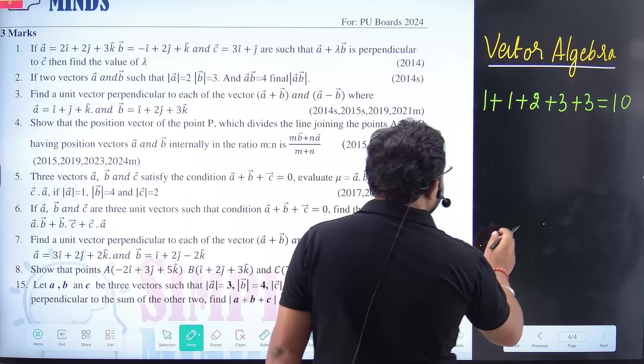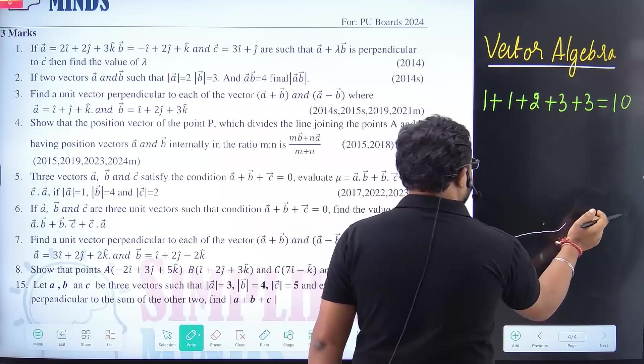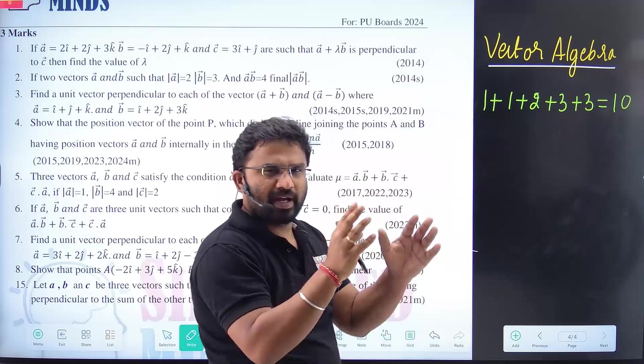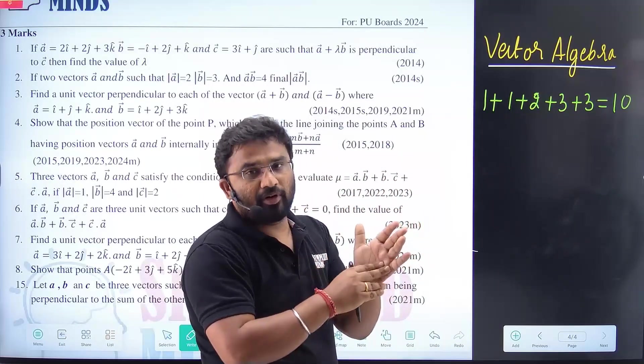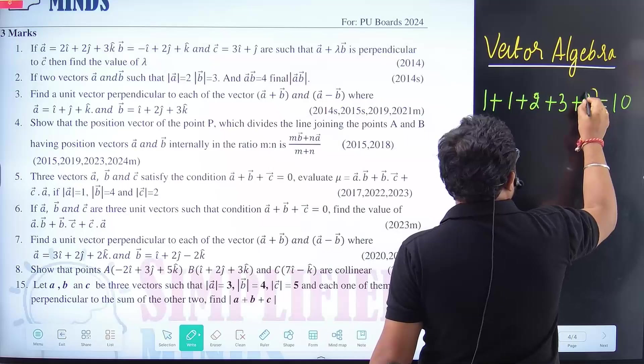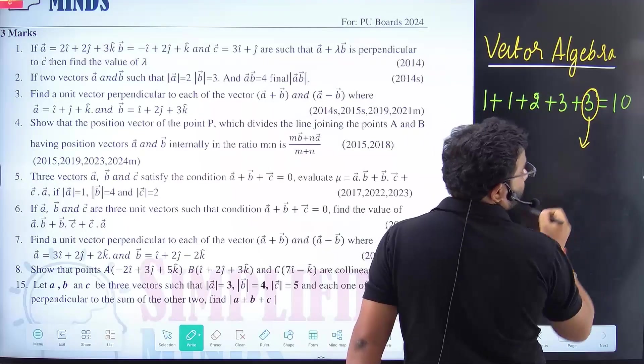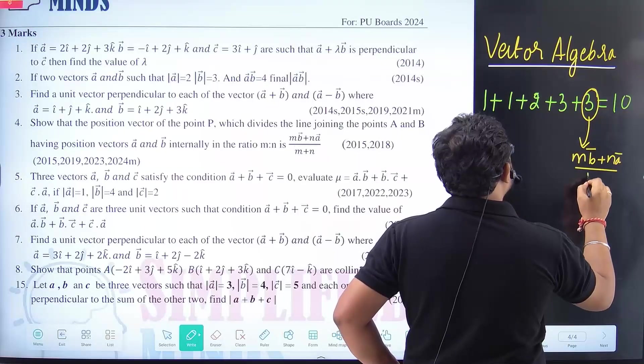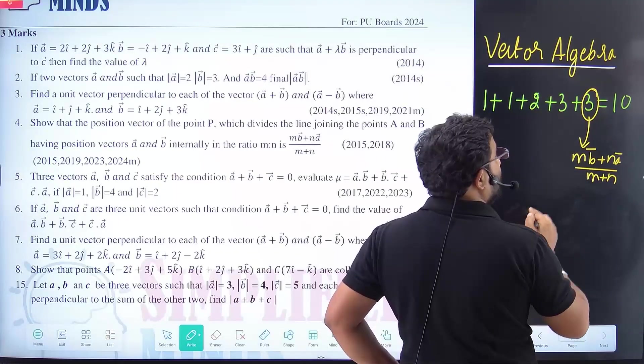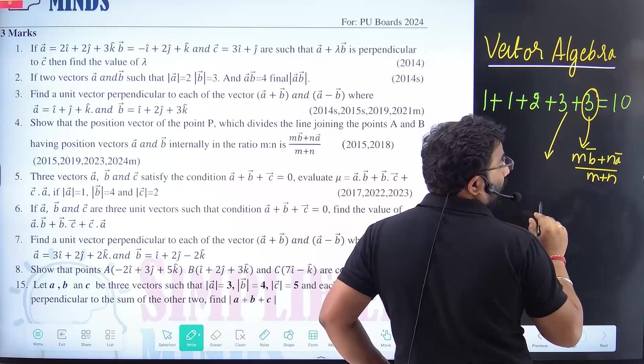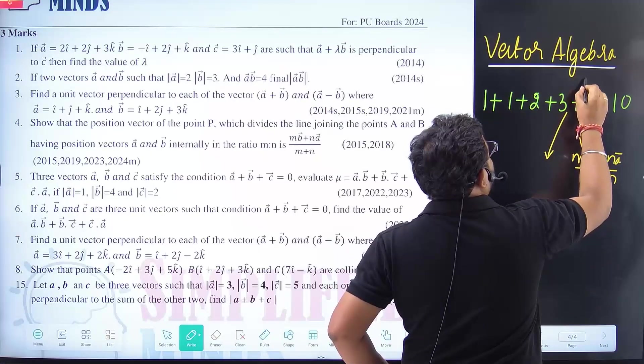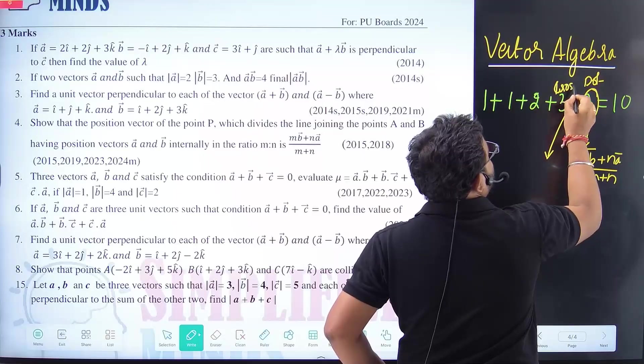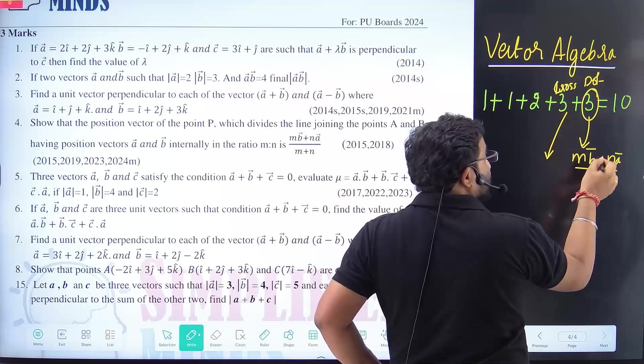Coming to the marks here. So what are you going to say? Usually three markers basically. So one three markers, usually chapterally, you have something called as basics first. That means scalar product, that means vector product. So three markers, one vector question, one mostly is derivation. That is that mb vector plus, you know, na vector divided by m plus. Simple derivation.